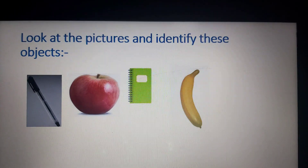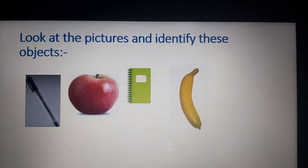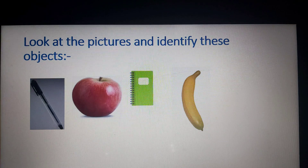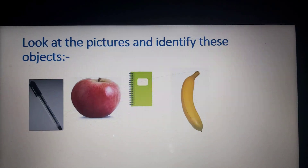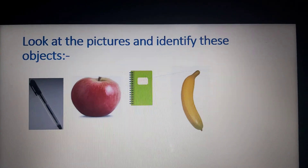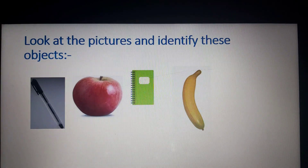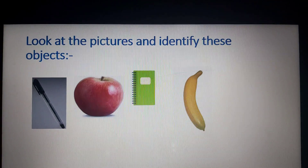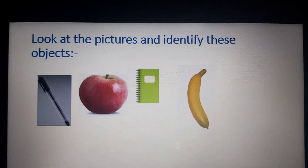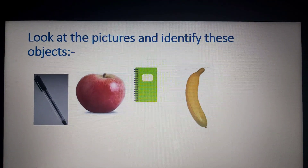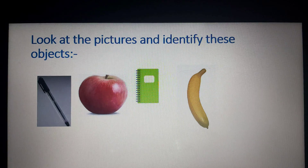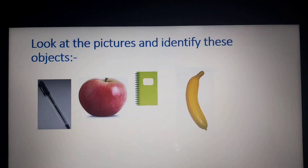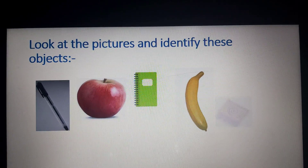Now move to the next one. What is this? It is a banana. Right. And what is the color of the banana? It is yellow. Good. Now tell me, is it long or is it round? Yes, right. It is long.